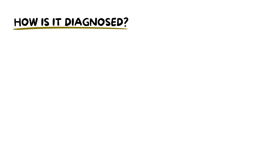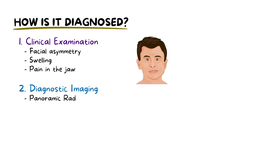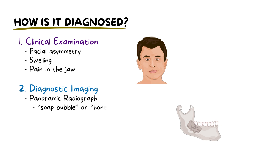Diagnosing ameloblastoma often starts with a clinical examination. The initial signs might include facial asymmetry, swelling, or pain in the jaw. A thorough oral examination can sometimes reveal a bony expansion. The next step involves panoramic radiography, highlighting the lesion's soap bubble or honeycomb appearance. For a detailed 3D perspective, cone-beam computed tomography, or CBCT, is used.